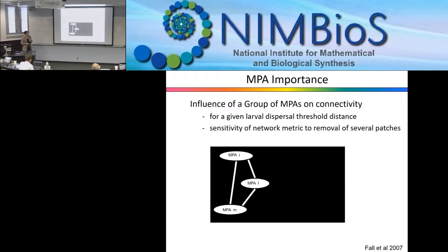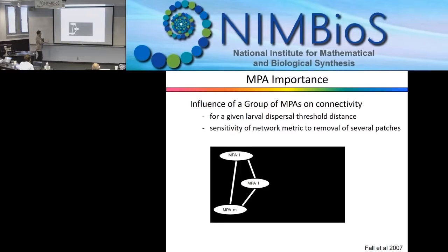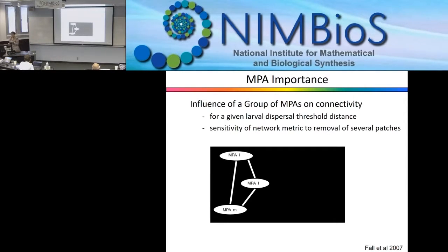We can remove one area, but we can also remove a group. Maybe in ecological space, a specific group of species was in one location, the habitat got destroyed, and we completely lost that genetic group. We can test this: remove a group of areas and see how important that group was for maintaining genetic diversity.